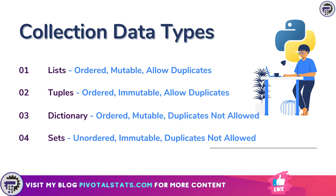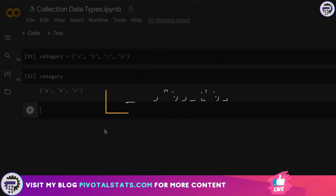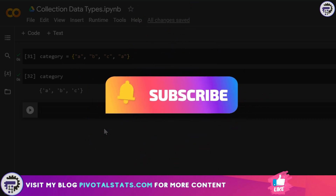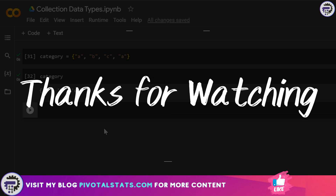Those are the four collection data types in Python — list, tuple, dictionary, and set. Understanding each of their attributes is important so you can identify which data type to use in a given situation. If you have any doubts, feel free to comment below. If this content was helpful, please subscribe and hit the notification bell so you don't miss future uploads. Thank you for watching — see you in the next one!